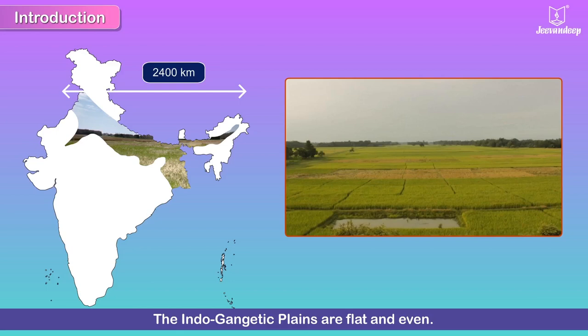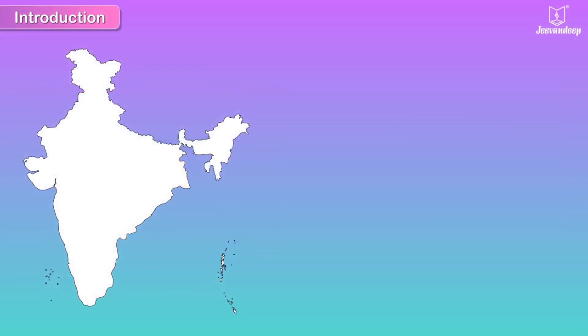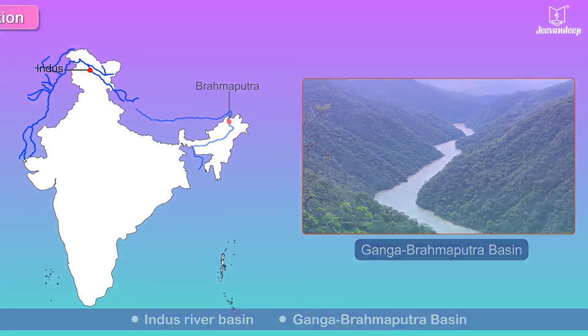The Indo-Gangetic plains are flat and even, stretching up to 2400 kilometers from west to east and with a width of 260 to about 350 kilometers. The northern plains can be divided into two river basins: the Indus Basin in the west and the Ganga-Brahmaputra Basin in the east.